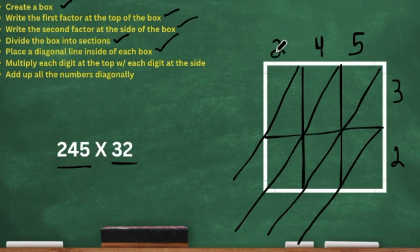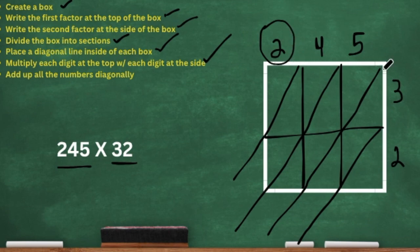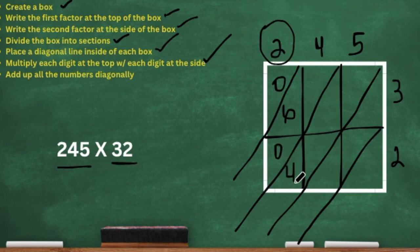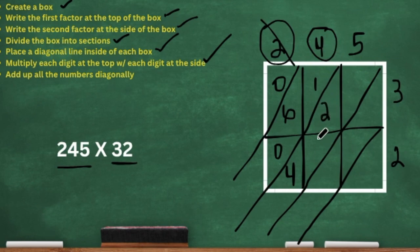We're going to do the two first — that's the first digit — and multiply it by the three on the other side. Two times three is six; since it's a one-digit number, we add the zero before it. Now two times two is four — add the zero first, then put the four. So now let's go to the four: four times three is 12 — a two-digit number, so we add the 12. Then four times two is eight — a one-digit number, so add the zero before it.